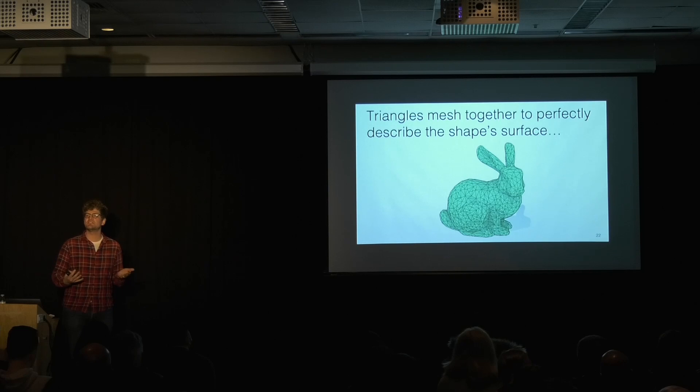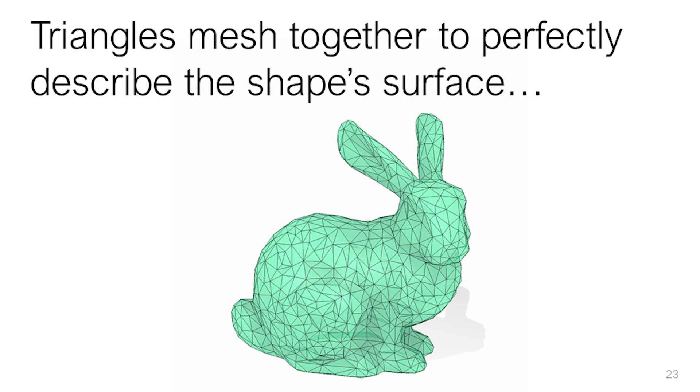So if all of these triangles mesh together perfectly, then this will perfectly describe what's inside of the shape and what's outside of the shape. So imagine that we poured water from the top inside of this bunny. We would see that none of the water is able to leave. And in fact, in our academic community, we say that a mesh of triangles that has this property is watertight. We know what's inside and what's outside.